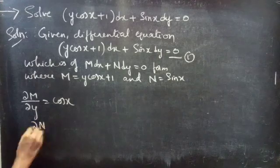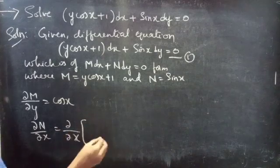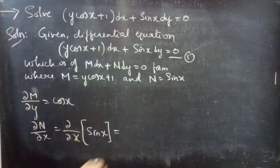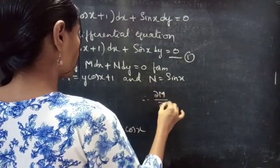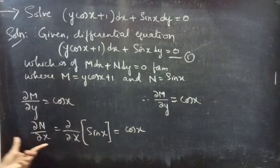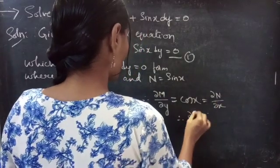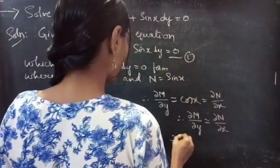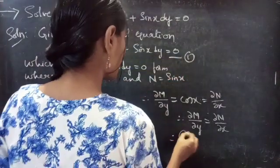Now we will find the partial derivative of N with respect to x. For N = sin x, the derivative of sin x with respect to x is cos x. Therefore ∂N/∂x = cos x. Since ∂M/∂y = ∂N/∂x, we can say that the given differential equation (equation 1) is an exact equation.